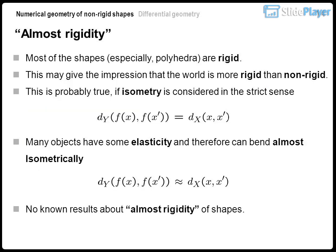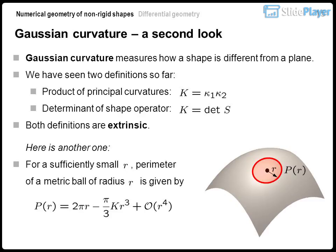Almost rigidity: most shapes, especially polyhedra, are rigid, which may give the impression that the world is more rigid than non-rigid. This is probably true if isometry is considered in the strict sense. Many objects have some elasticity and can therefore bend almost isometrically. There are no known results about almost rigidity of shapes.